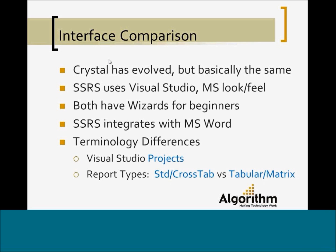Both products offer wizards, so beginning users can walk through screens to set up a query and drop fields, groups, and sorts to build a report. SSRS in the latest version also has integration with Microsoft Word as an interface to build reports, which is good if you're intimidated by Visual Studio. There are also some terminology differences: Visual Studio uses 'projects' as containers for files, while Crystal uses 'standard reports' or 'crosstab reports,' whereas SSRS calls those 'tabular' or 'matrix' reports — they're really the same thing.